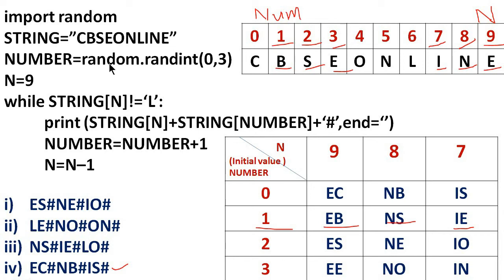When the random number generated is 2: number is 2, n is 9. string[9]='e', string[2]='s', gives 'es#'. Then number increments to 3, n decrements to 8: string[8]='n', string[3]='e', gives 'ne#'. Then number increments to 4, n decrements to 7: string[7]='i', string[4]='o', gives 'io#'. So output is 'es#ne#io#'. Checking the options — yes, that is option 1.